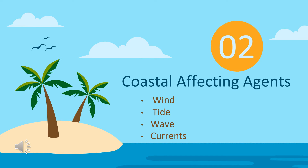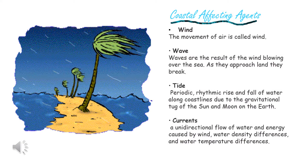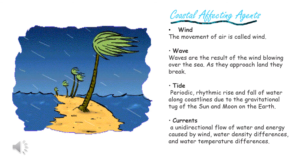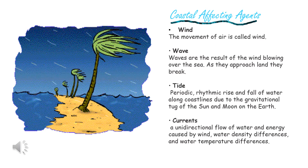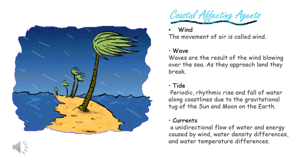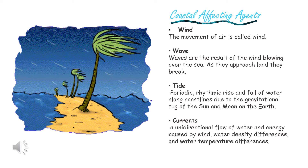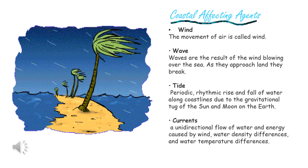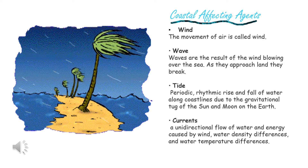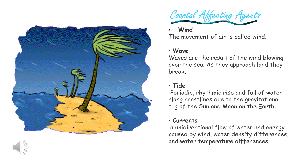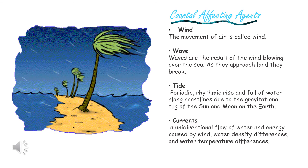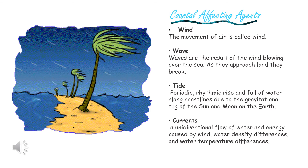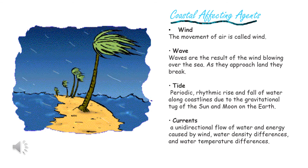These are the four coastal affecting agents: wind, tide, wave, and currents. Wind is simply the movement of air, and waves are the result of wind blowing over the sea — as they approach land, they break. Tide is the periodic rhythmic rise and fall of water along coastlines due to the gravitational pull of the sun and moon on the earth. Currents are a directional flow of water and energy caused by wind, water density differences, and water temperature differences.